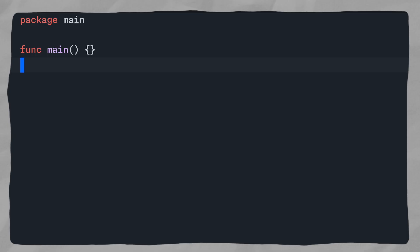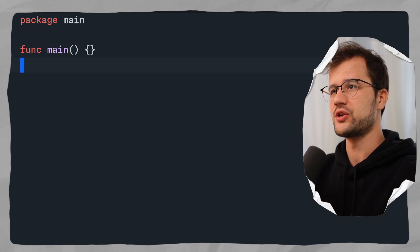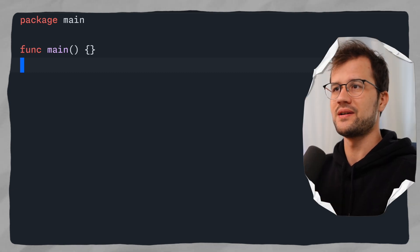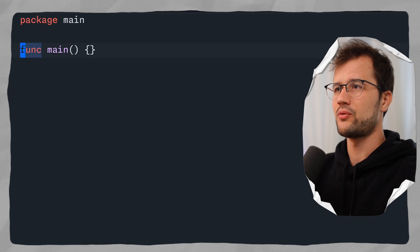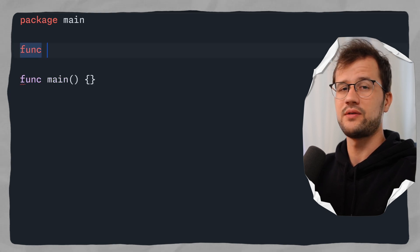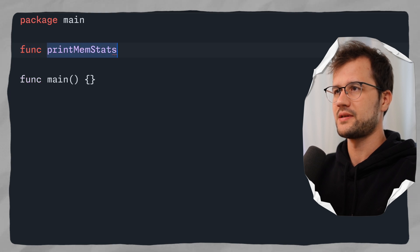Alright, let's get straight to the code. We have here a plain Golang project using only the standard library. What we're going to do first is create a new function — let's call it printMemStats — to print the memory statistics.